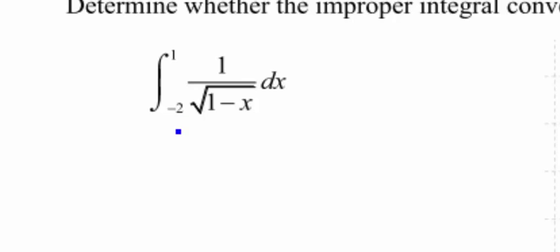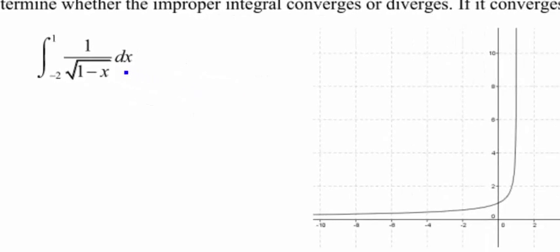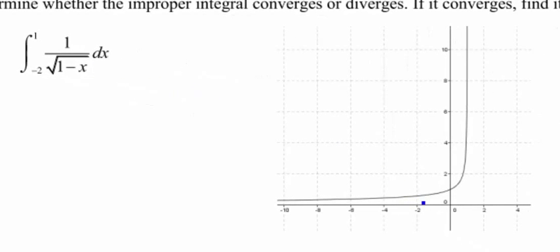All right, the integral we're going to be looking at here is from negative 2 to 1 of 1 over the square root of 1 minus x dx. I graphed this function in Geogebra, so negative 2 starts here. We're trying to find the area under this curve until we get to 1. And look what happens at 1, the graph shoots up and it has a vertical asymptote.